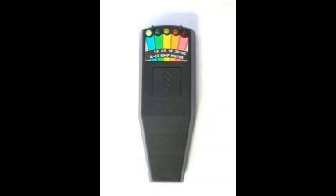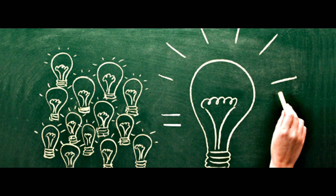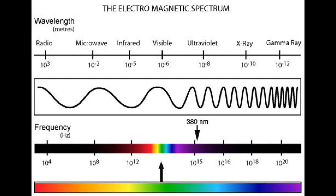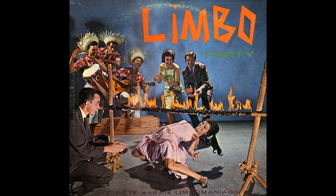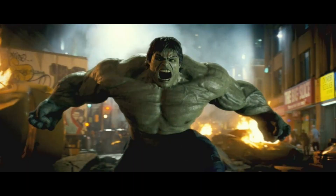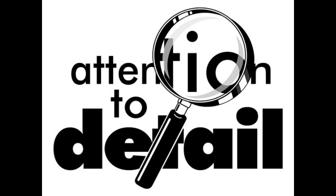Chances are if you're a paranormal investigator, you probably already own an EMF meter, but before we get into those, we have to first understand the electromagnetic spectrum. What the electromagnetic spectrum is, is the range of all possible frequencies of electromagnetic radiation. The spectrum extends from really low frequencies used in radio communication to gamma radiation that have very short wavelengths. We'll get into much more detail about those things in a second.